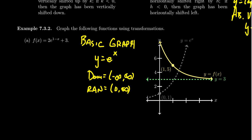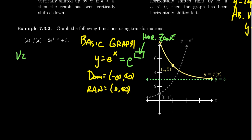Think of the function as y equals e to the box — anything inside that box is in the horizontal zone. The things that are the exponent of e are the horizontal zone; the things that aren't the exponent of e are vertical transformations. So the times-by-2 and the plus-3 are vertical transformations. Enumerating: there's a vertical stretch by a factor of 2 and a shift up by 3. These are vertical transformations, so they will affect the range.